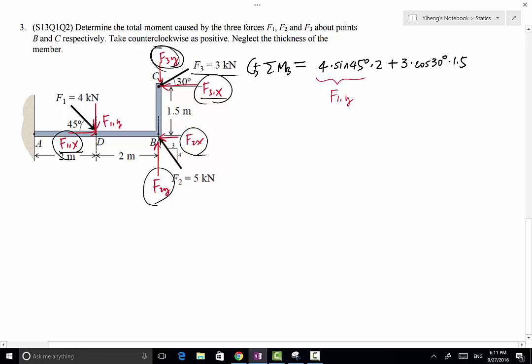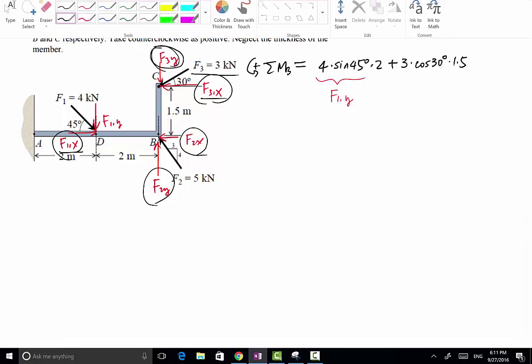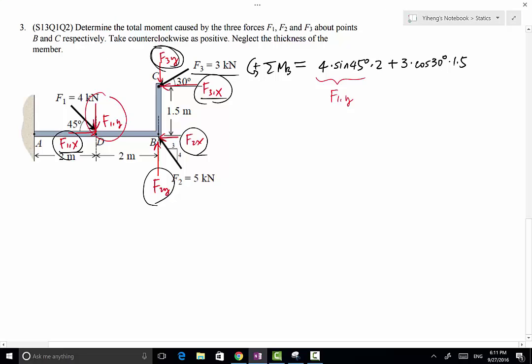these four force components don't have moment about point B. Therefore we ended up only calculating the moment caused by F1Y and F3X. From there we can evaluate, and that equals 9.55 in the unit of kNm.